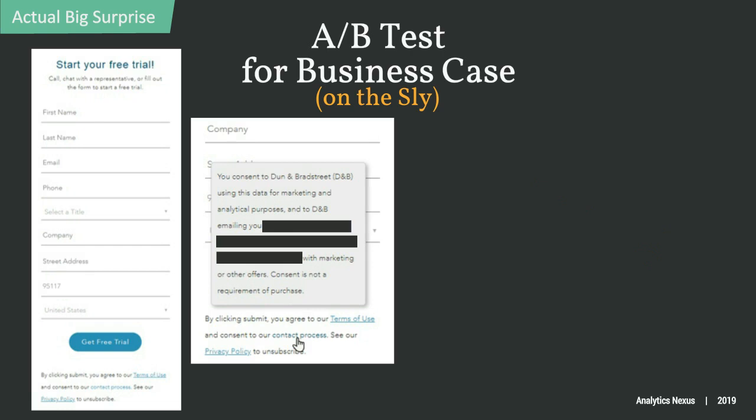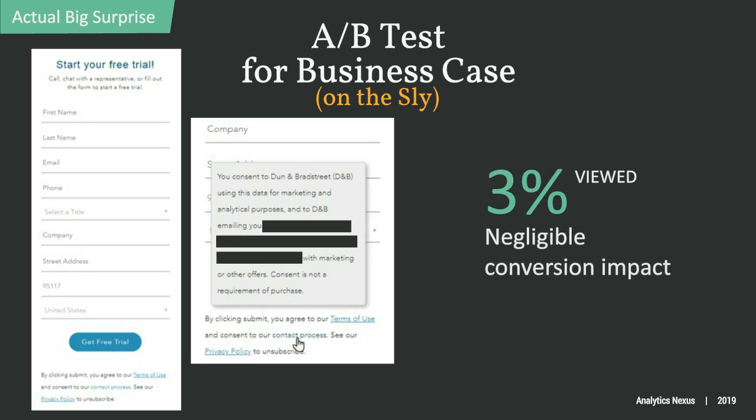So we ran an A-B test removing the alarmist legal jargon from the form. The results were — look, it can be difficult to be truly ambivalent about test outcomes and keep your ego out of the picture. I can't tell you that I wasn't disappointed to find that few people even saw the legalese, and for those who did, the robo-dial language didn't appear to make a difference. I won't ever tell our legal team about this, but it's true.